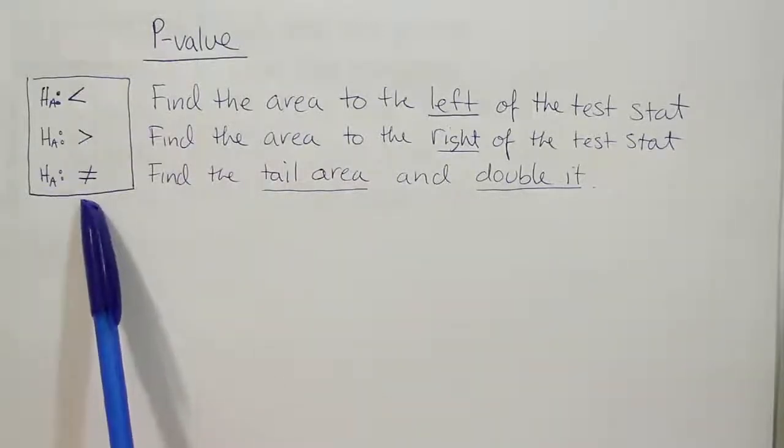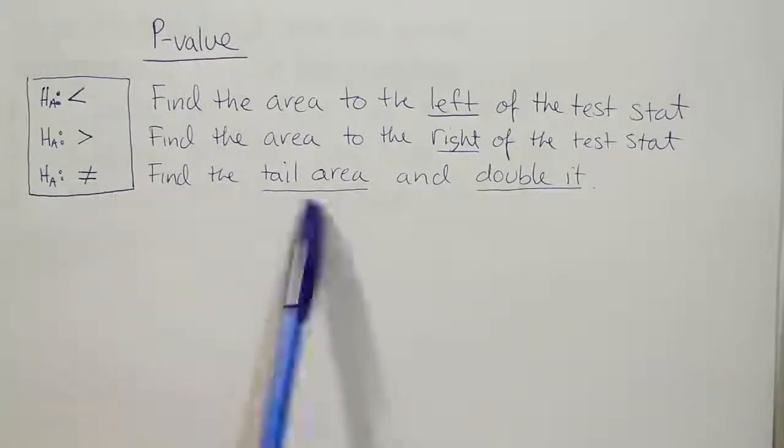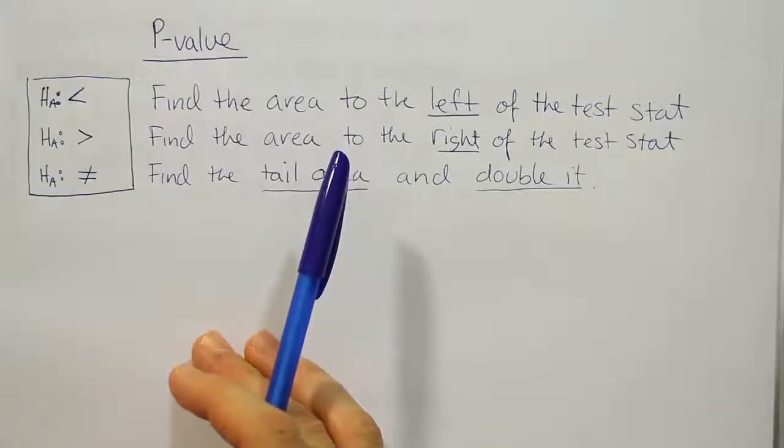And then finally, if HA has a not equal to symbol, we find the tail area and then we double it. So find the area of the tail and then double it.